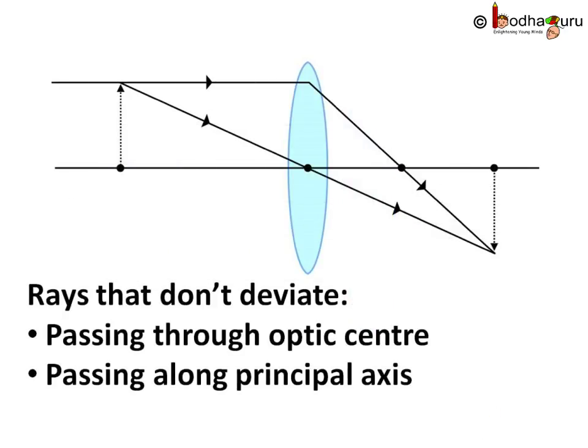Now how much the ray will bend depends on its path. For example, any ray passing along the principal axis doesn't deviate, that is it doesn't bend, and any ray passing through optical center doesn't deviate.